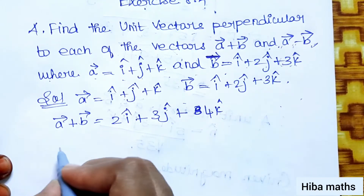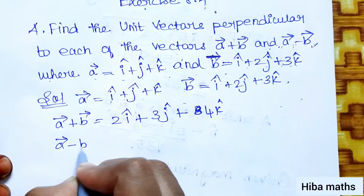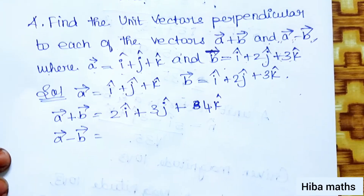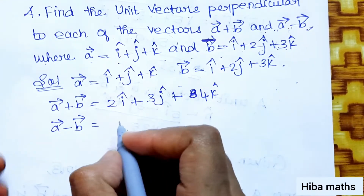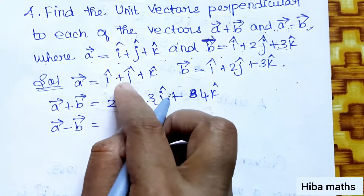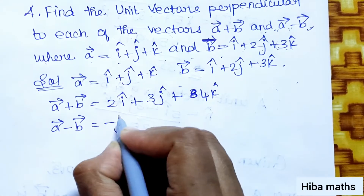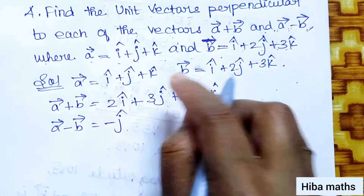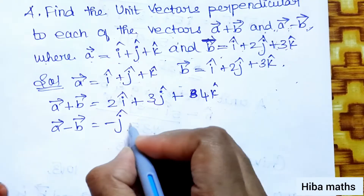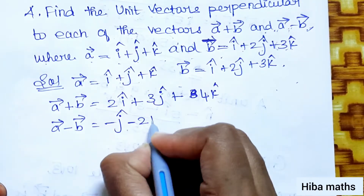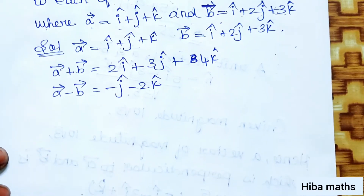Now A vector minus B vector: i-i=0, j-2j=-j, k-3k=-2k. So A-B equals 0i minus j minus 2k.